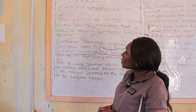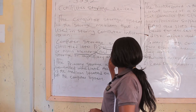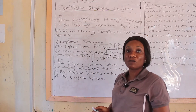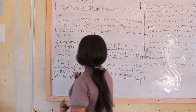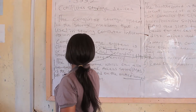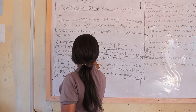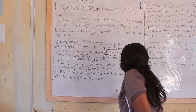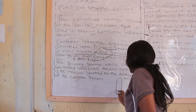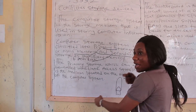The secondary storage system refers to the devices that you get from outside the computer to save your work. Examples include the flash disk — we all know the flash disk. It is hung around the neck and has a cover. What you do is pull the cover, slot it into the system unit, and transfer your information.